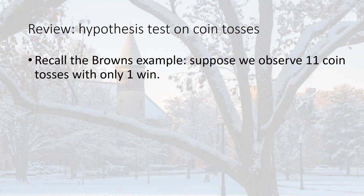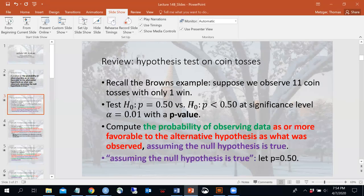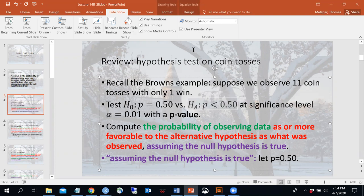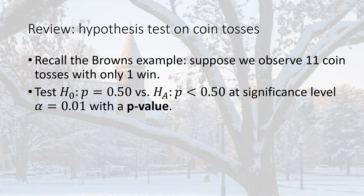We took 11 coin tosses and won one of them. Our goal is to test a null hypothesis that the true probability p equals 50% versus an alternative that p is less than 50%, at a significance level of 0.01. Rather than pick a rejection region like we've done before, let's use a p-value to test this hypothesis.